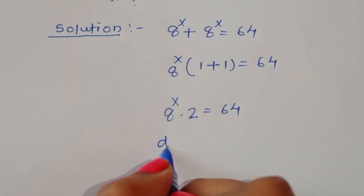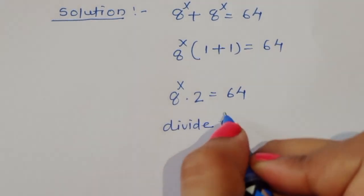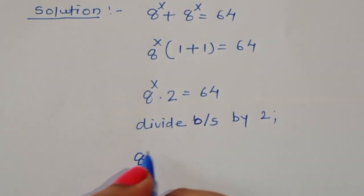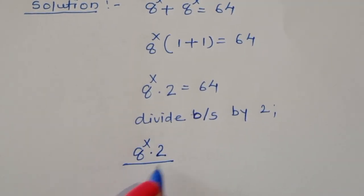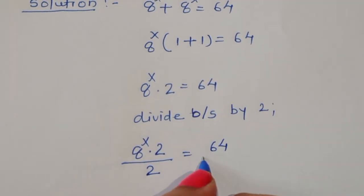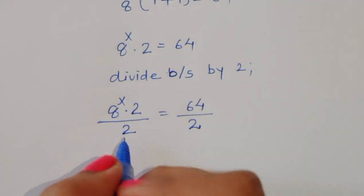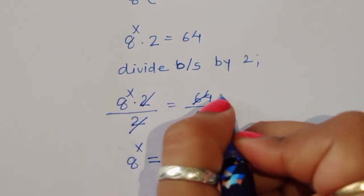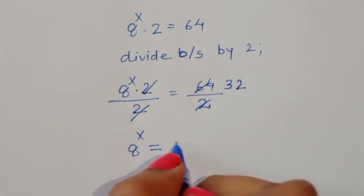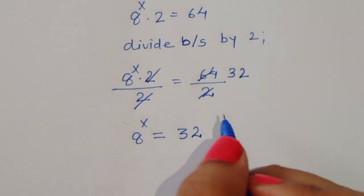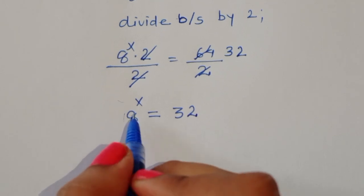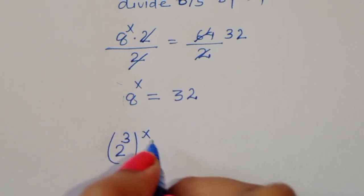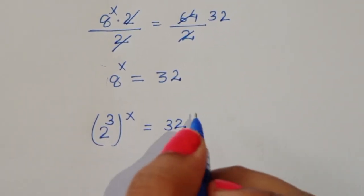So 8 power x times 2 equals 64. Dividing both sides by 2, we get 8 power x equals 32. Now, 64 divided by 2 is 32, so 8 power x equals 32.